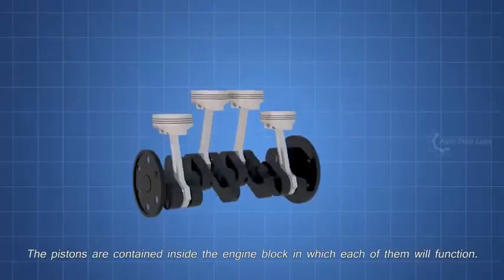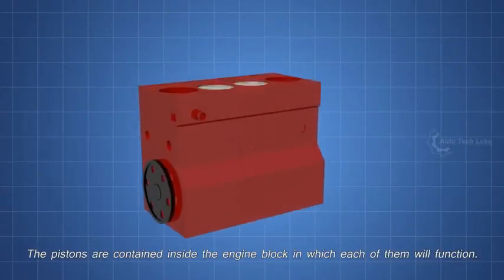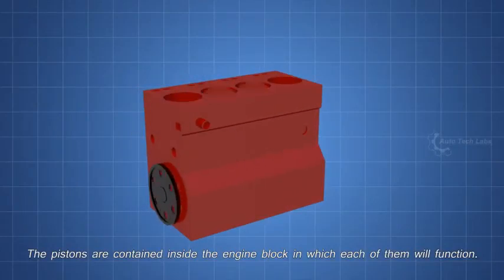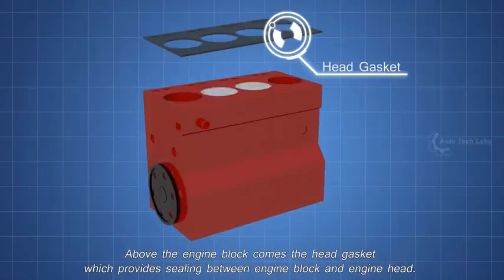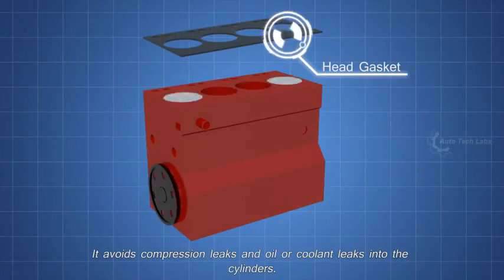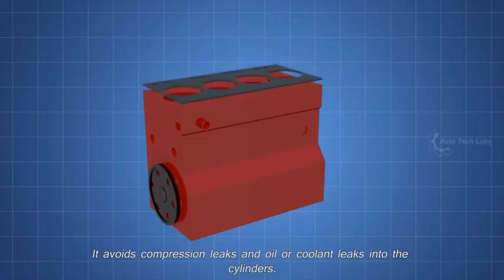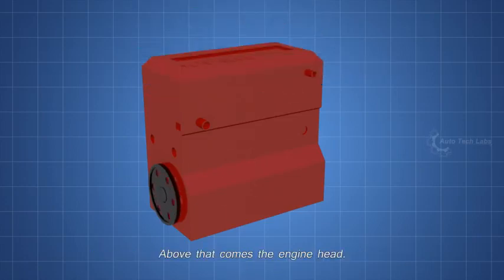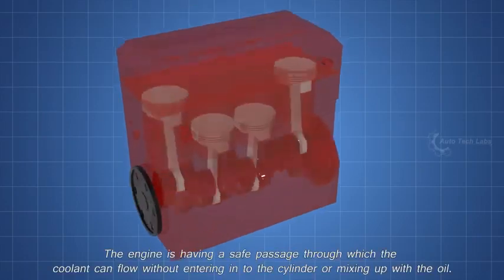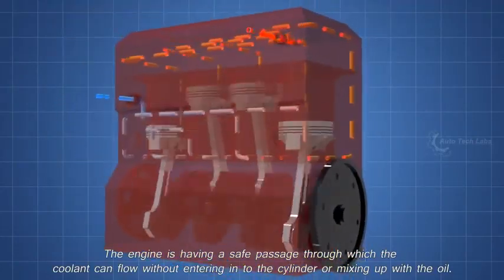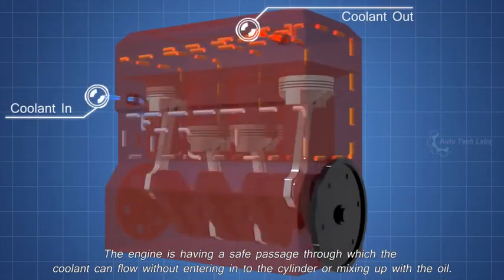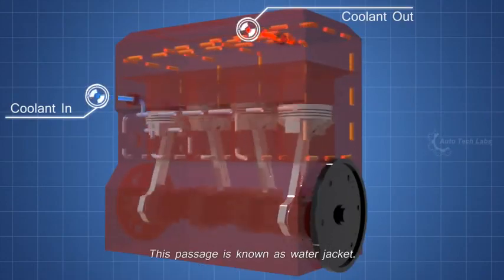The pistons are contained inside the engine block, in which each of them will function. Above the engine block comes the head gasket which provides sealing between engine block and engine head. It avoids compression leaks and oil or coolant leaks into the cylinders. Above that comes the engine head. The engine is having a safe passage through which the coolant can flow without entering into the cylinder or mixing up with the oil. This passage is known as water jacket.